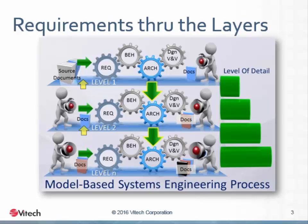Requirements activities take place at every layer. The objective is to do sufficient work on the requirements appropriate to the layer being worked at the time. At the higher levels of abstraction, the sketch of the system being created calls for a sketch of the requirements. As the design advances and increases in granularity, the requirements will become clearer and more detailed. It is not the objective to do all of the requirements work in one go on the first layer. We will assume that as systems engineers, we are capturing or eliciting the requirements in addition to just interpreting requirements that have been given to us.